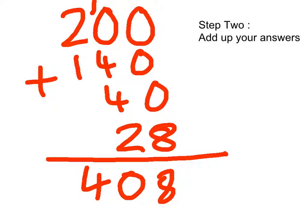0 and 0 and 0 equals 8, so that's right. So 0 add 4, add 4, add 2 equals 10, so you put the 0 there and add the 1 up there.